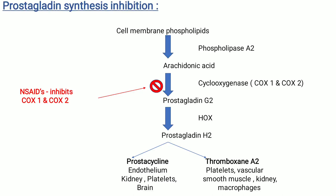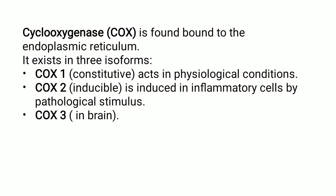Thus, pain sensation is not detected by our brain. Cyclooxygenase COX is bound to the endoplasmic reticulum. It exists in three isoforms: COX-1, COX-2, and COX-3. COX-1 acts under physiological conditions. COX-2 is induced in inflammatory cells by pathological stimulus. And COX-3 is found in the brain.